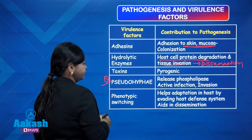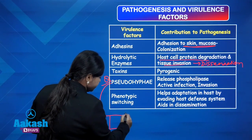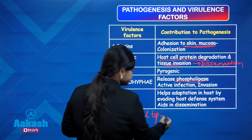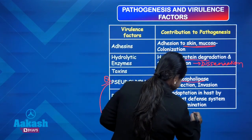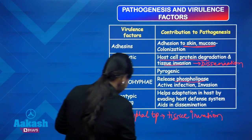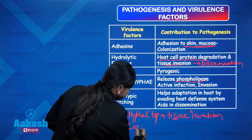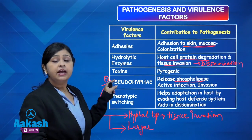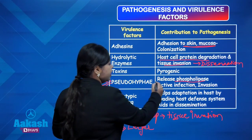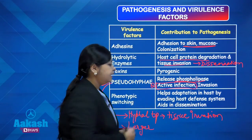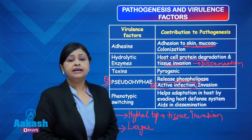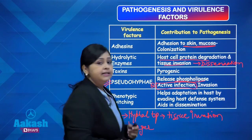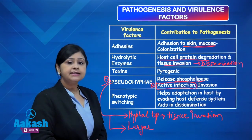Pseudohyphae is a very important virulence factor of Candida, playing a role in pathogenesis in two ways. First, the hyphal tip has the enzyme phospholipase which helps in tissue invasion. Second, the hyphal form is larger compared to the yeast cell, making it more resistant to phagocytosis. Phenotypic switching means Candida can switch between different morphological forms — yeast, pseudohyphae, and hyphae — aiding adaptation by evading host defenses and aiding in dissemination. The presence of pseudohyphae indicates active infection.